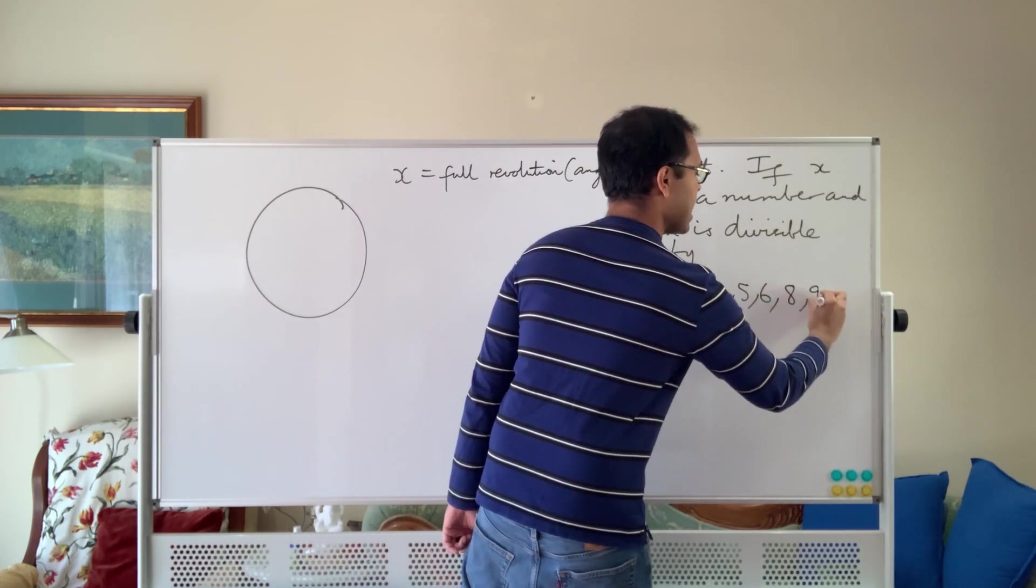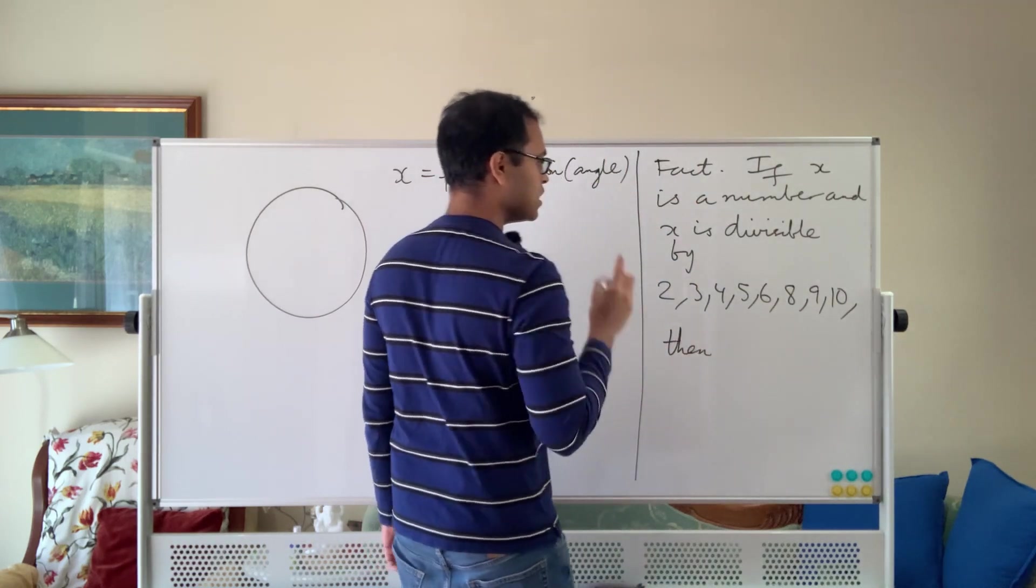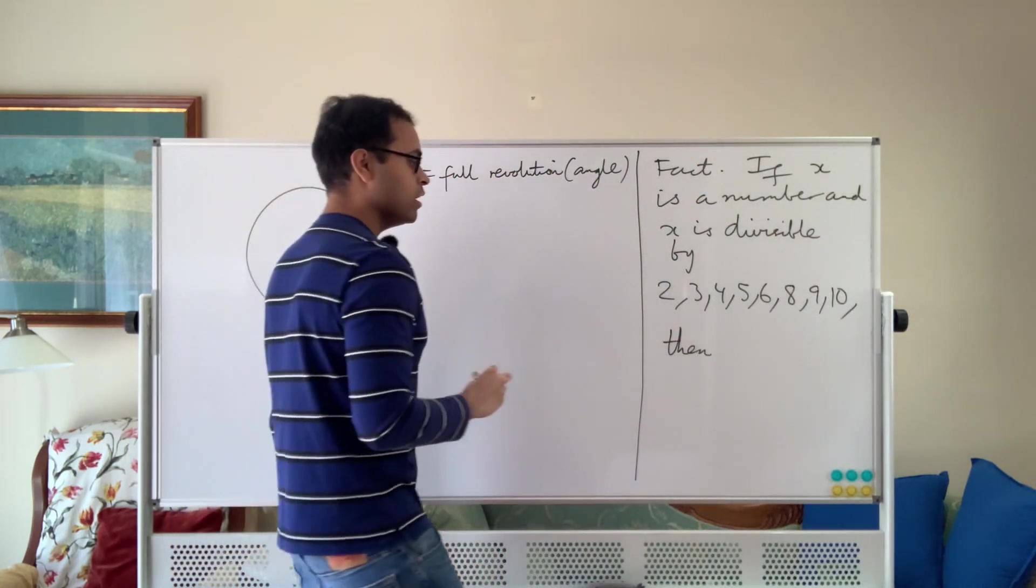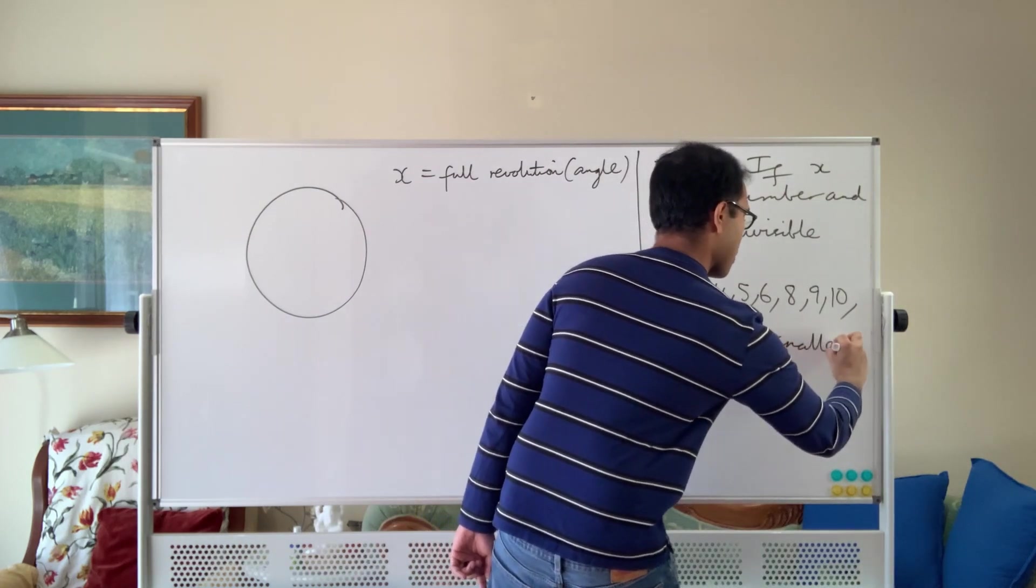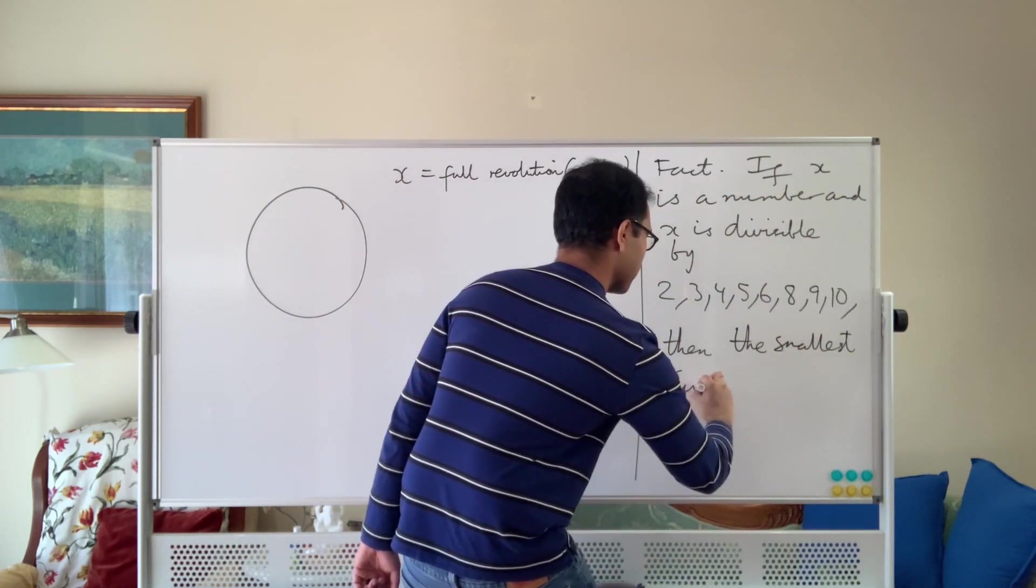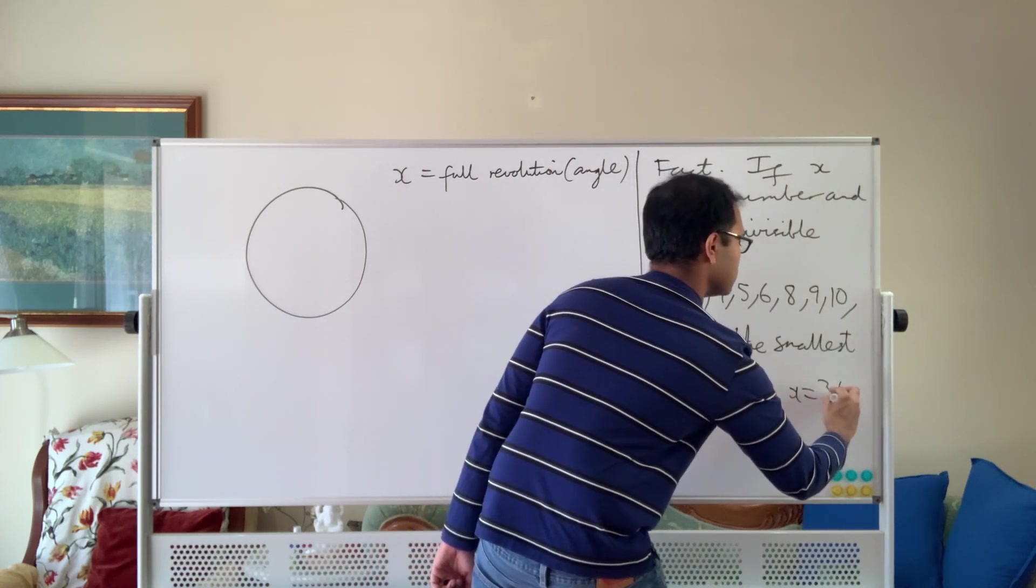8, 9, and 10, then x has to be, then the smallest such x, the smallest such x is x equals to 360.